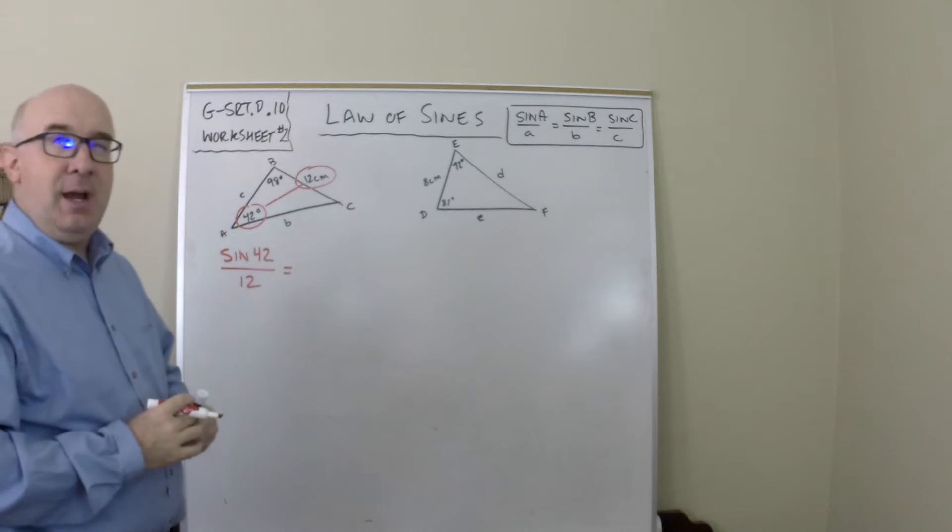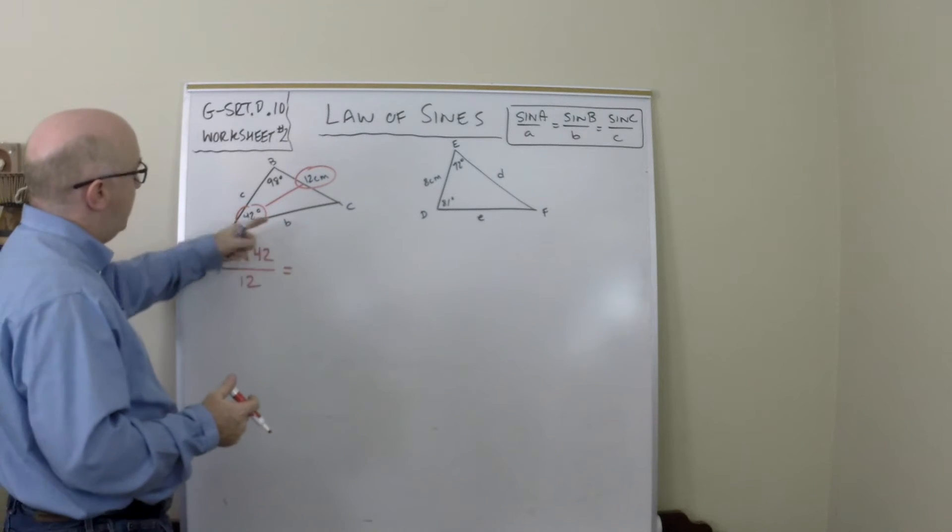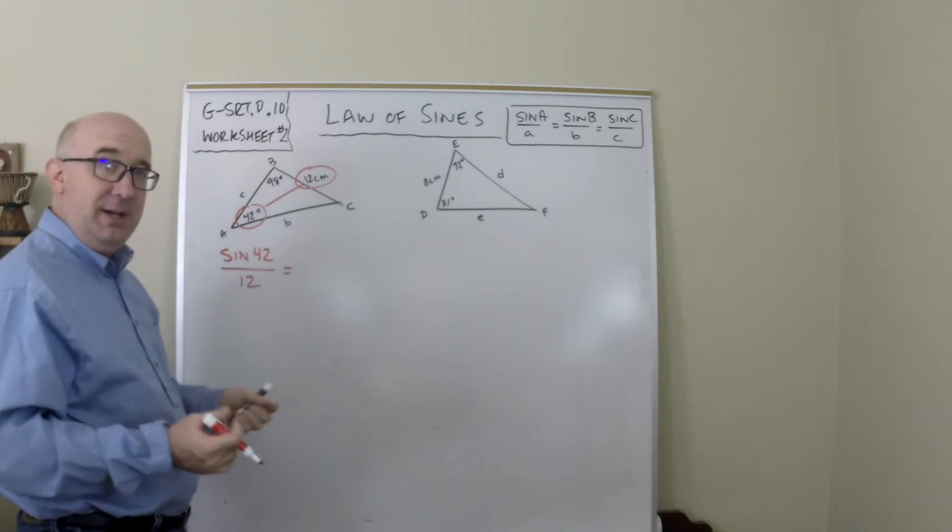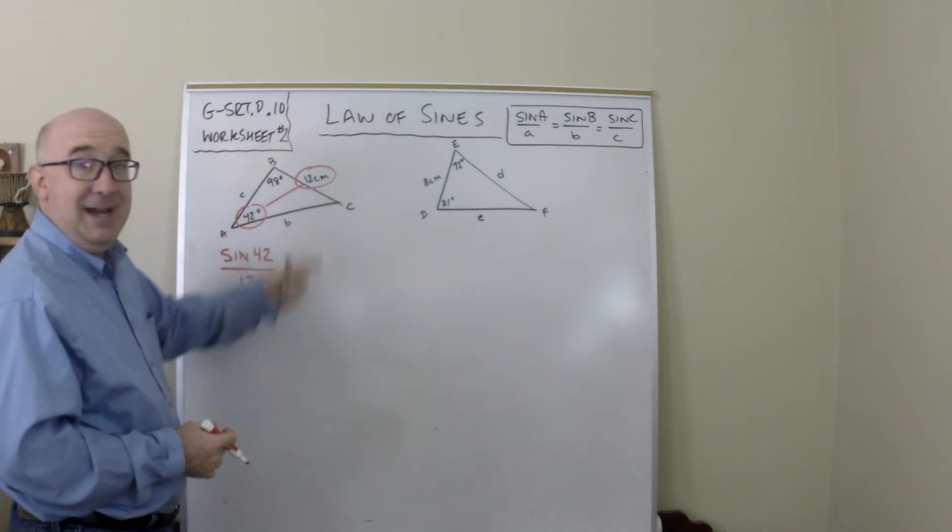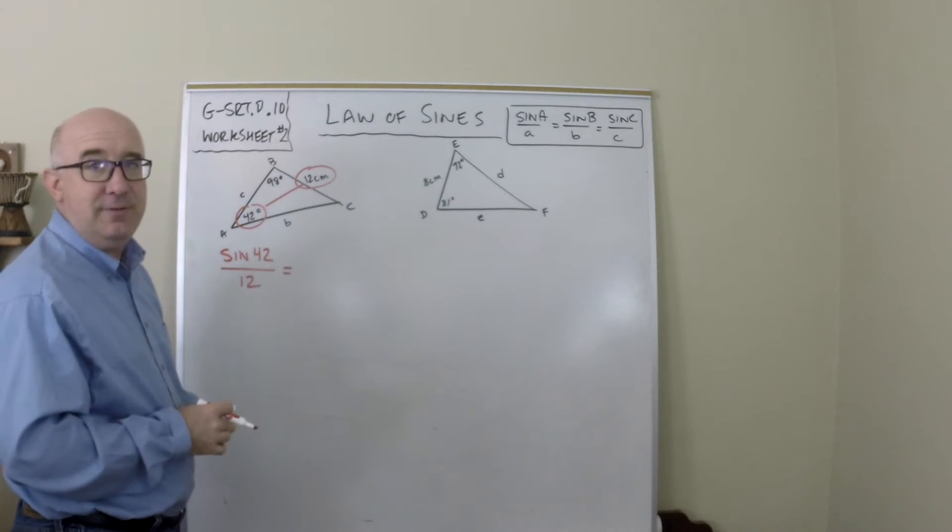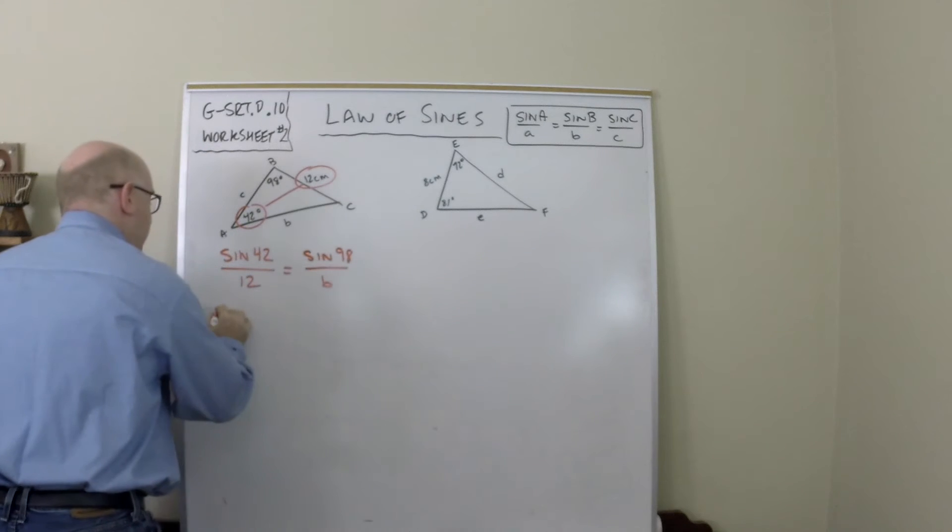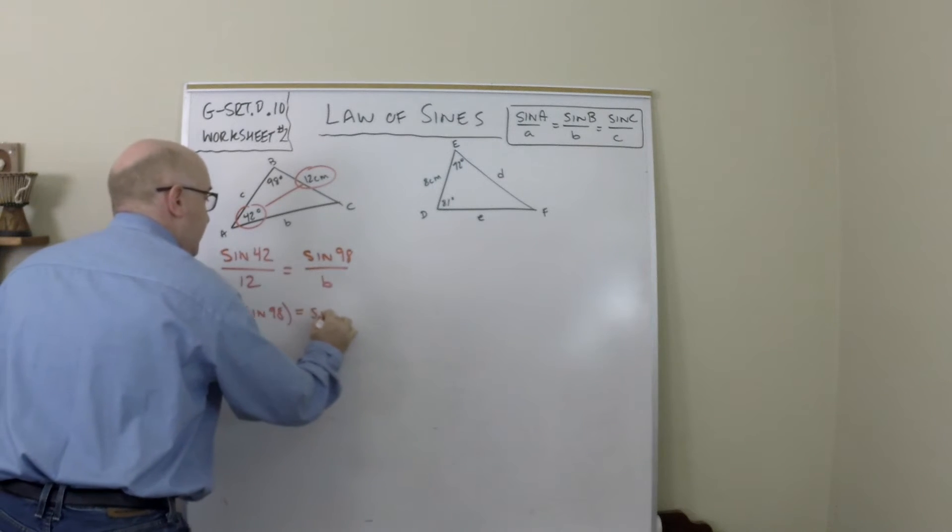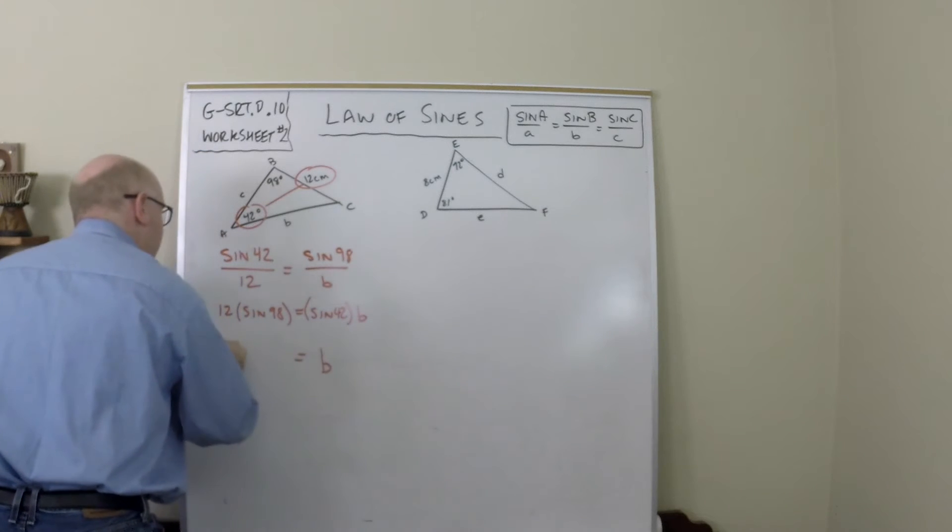From this point, I can just start setting things up and solving. Usually they want you to solve for the entire triangle. So I'm looking for b and I'm looking for C. This would be sine of 98 over little b, and we would cross multiply. So 12 times the sine of 98 equals sine of 42 times b. And we would divide both sides by sine of 42.